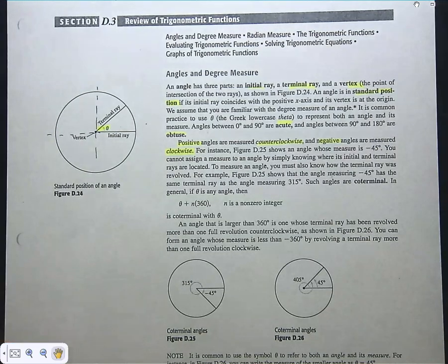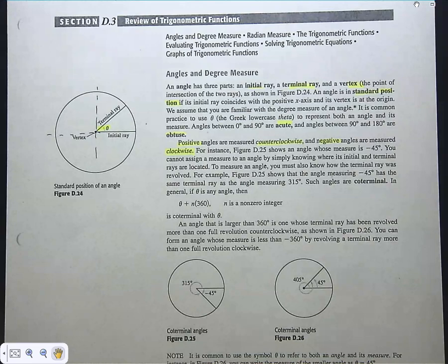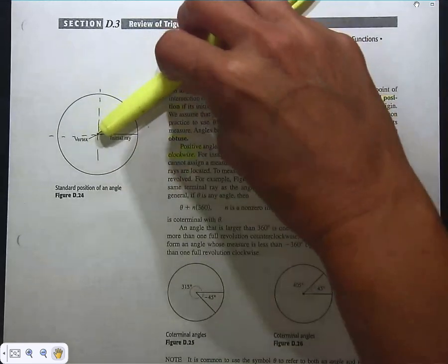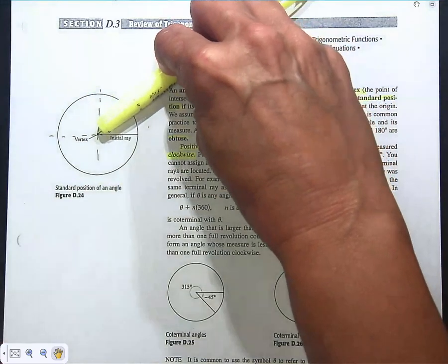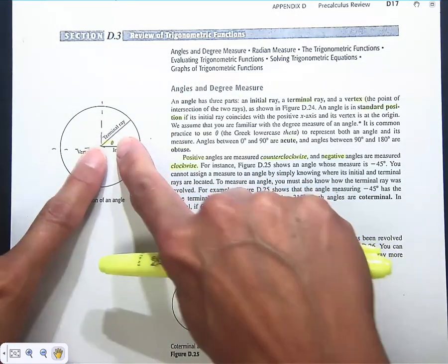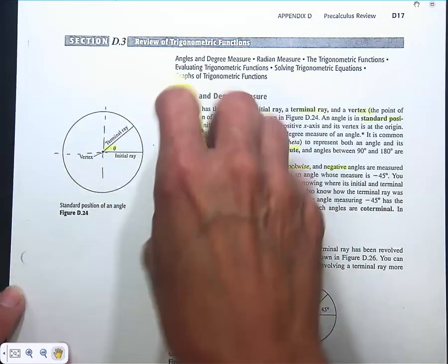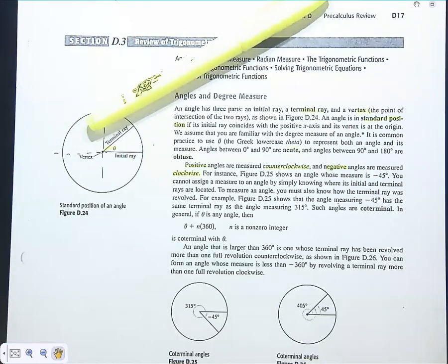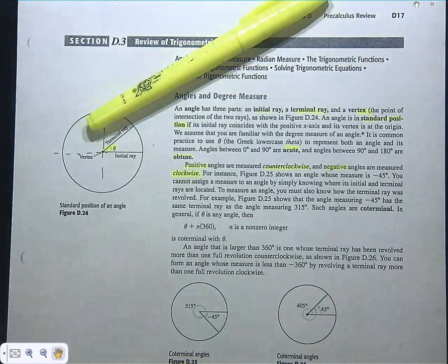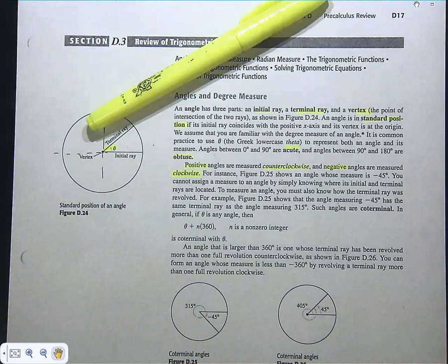Two angles that have the same initial side and the same terminal side are called coterminal angles. You can spin around that circle infinitely many times and stop at the same terminal side every time. For example, maybe 45 degrees — if you go around the circle again, where would you be at 405 degrees? You went 45 and then another 360. A 405-degree angle is coterminal with a 45-degree angle because the terminal side is in the same place.